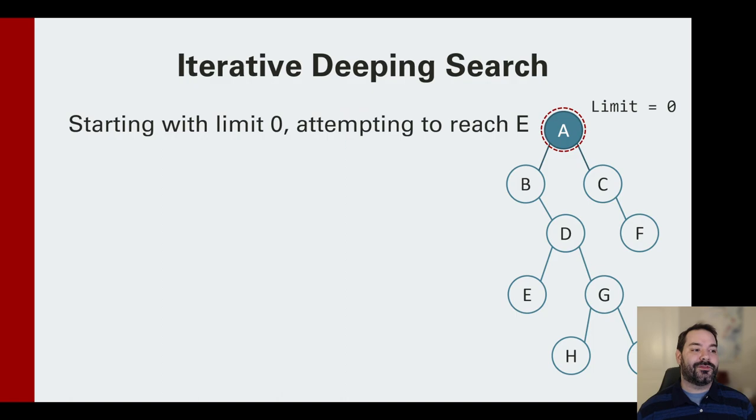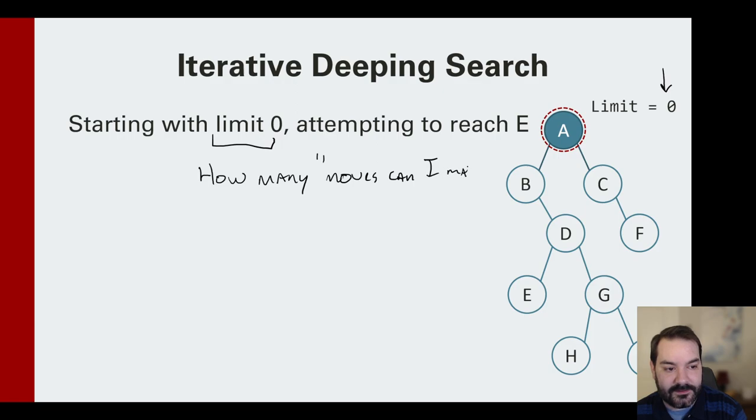So again, what we do is we actually start at a limit of zero. What we're essentially saying here with limit zero is how many moves can I make? The limit of zero is simply saying, given my starting location, am I at my goal? And let's arbitrarily say, you can see here, my goal is going to be E.